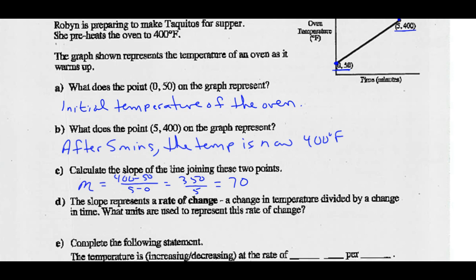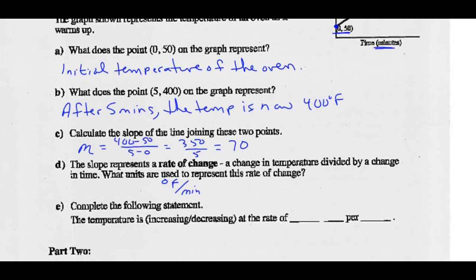Part D: The slope represents a rate of change — a change in temperature divided by a change in time. Rise is degrees Fahrenheit; run is time in minutes. So the units are degrees Fahrenheit per minute. The temperature is increasing from 50 degrees to 400 degrees at a rate of 70 degrees Fahrenheit per minute.